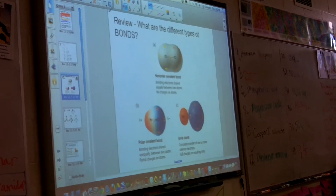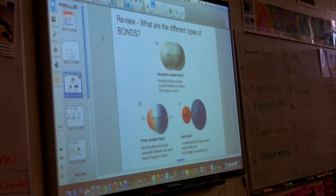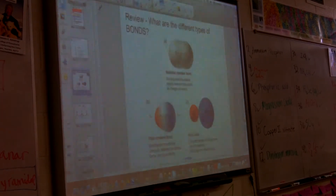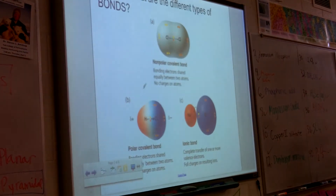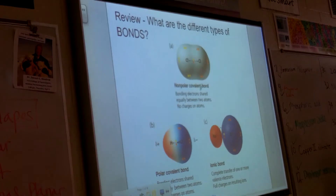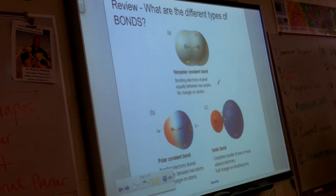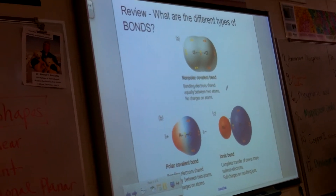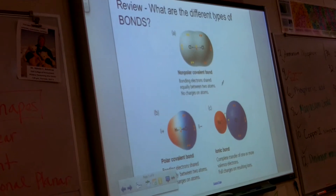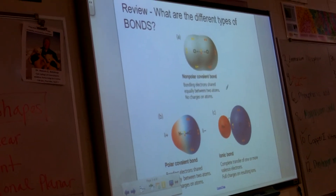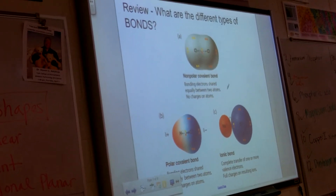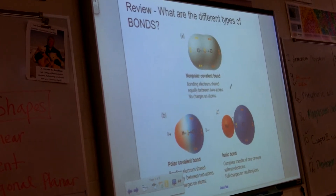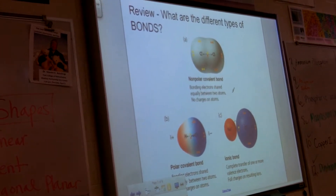We are going to learn a new thing today, but we're going to start off reviewing something. Do you remember when we learned about bonds? We learned about bonds, right? And how can you figure out what kind of bonds two atoms are going to form? What do you have to do?